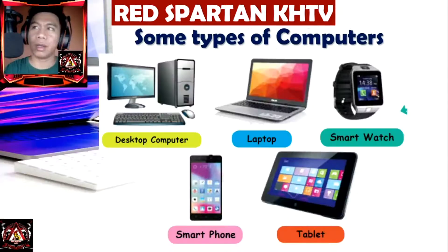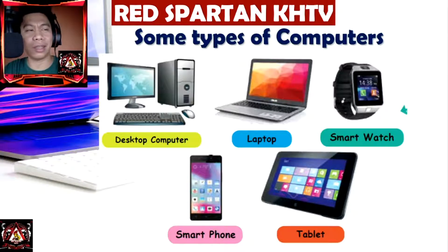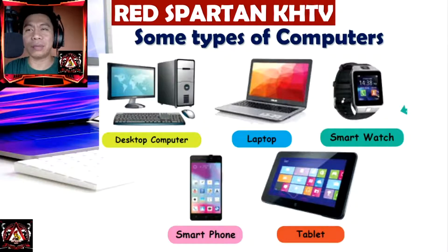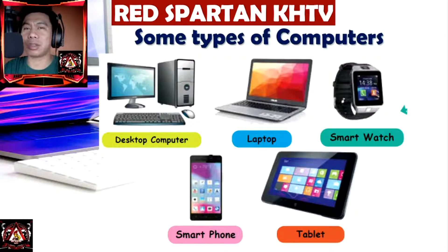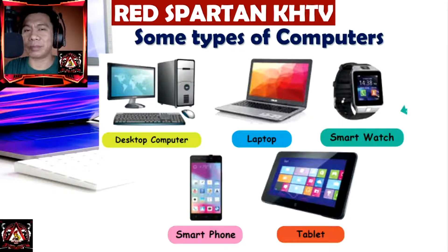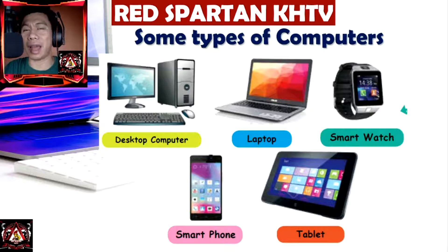Here we have some types of computers. The first type is the desktop computer, which is very common in internet shops or computer shops. Next is the laptop. A laptop is a kind of desktop computer, but it is easier for a person to carry whenever they travel or go somewhere — easier to carry than the desktop computer. Next is the smartwatch. Nowadays, smartwatches are commonly used by teenagers to access different apps without using their phone.